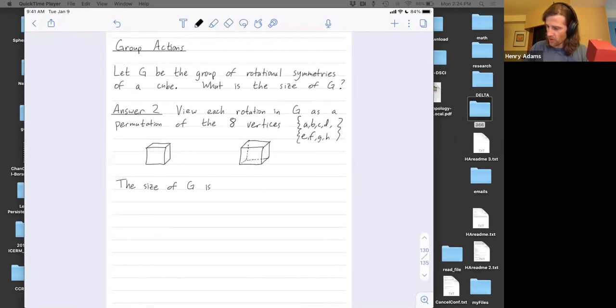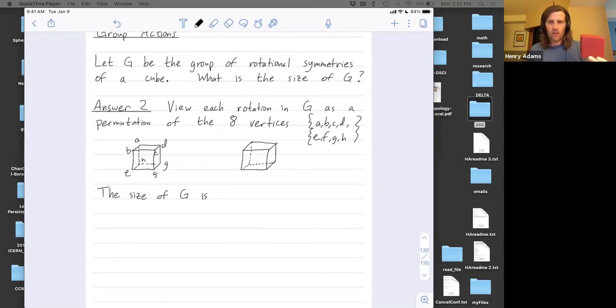G is hidden. Or sorry, H is hidden. H is right here. So now when I rotate this cube, I think of mapping different vertices onto each other, right? So if I rotate again around this axis and I rotate say 90 degrees, then maybe I'm mapping A onto B and B onto C and C onto D and D onto A. So I'm thinking of each rotation as a permutation of these eight vertices.